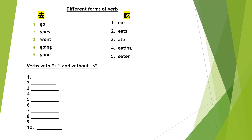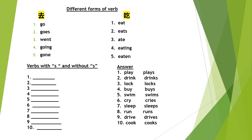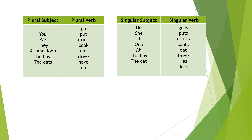Let me give you the answers now. Now look at the two tables — you have plural verbs and singular verbs. Plural verbs are verbs without the S. Singular verbs are all the verbs with an S.